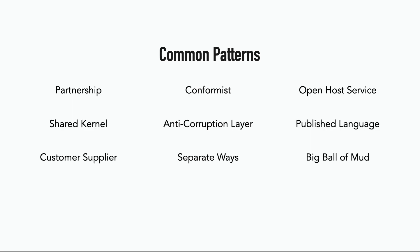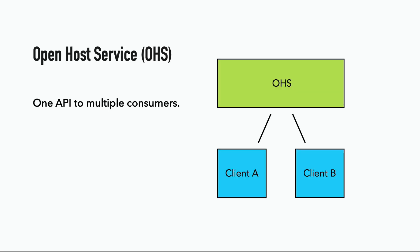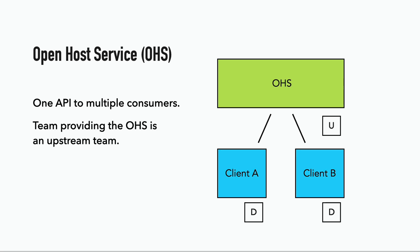Sometimes you may even see multiple patterns at once. Starting with the open host service pattern, which is often abbreviated to OHS, this is a shared API that provides some common functionality to multiple consumers. The team that provides the open host service is an upstream team, so the upstream-downstream power dynamic is at play, where the downstream team can often find themselves at the whim of the upstream team.